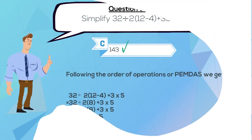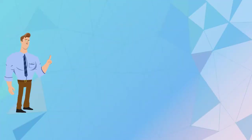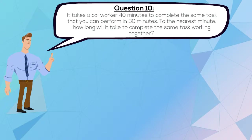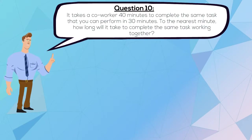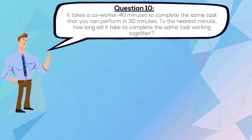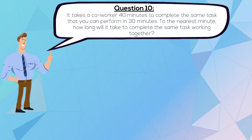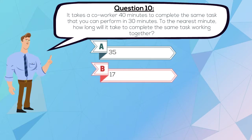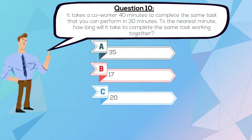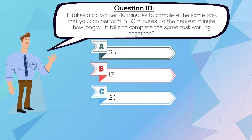Question 10. It takes a coworker 40 minutes to complete the same task that you can perform in 30 minutes. To the nearest minute, how long will it take to complete the same task working together? A. 35, B. 17, C. 20, or D. 32.